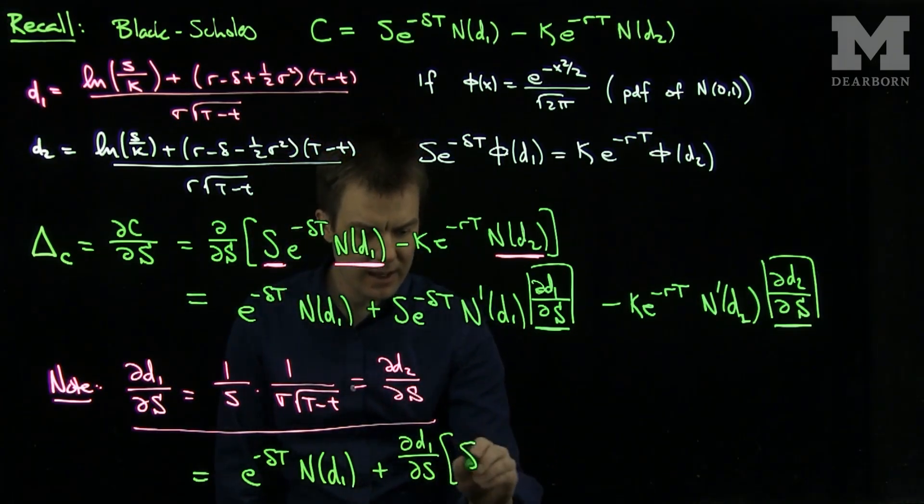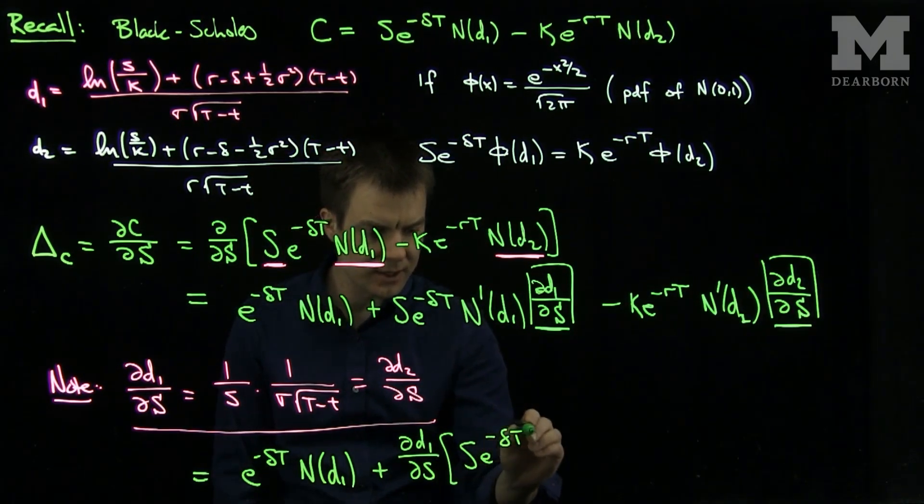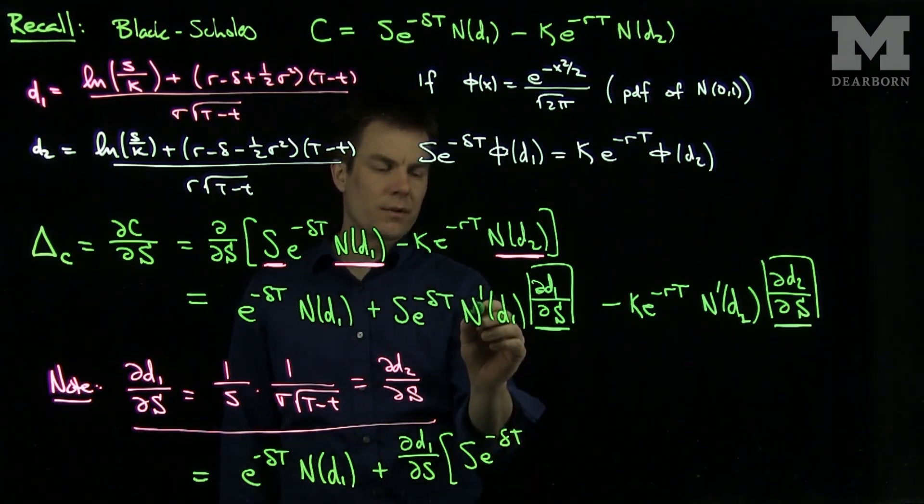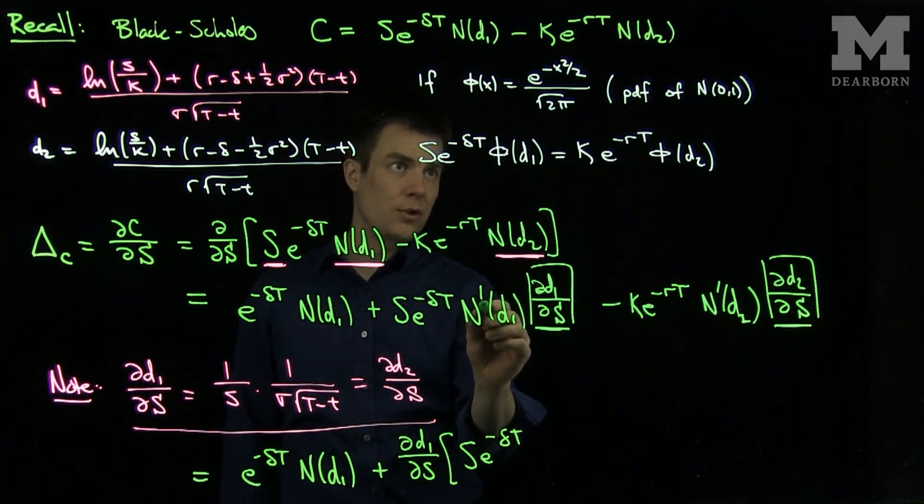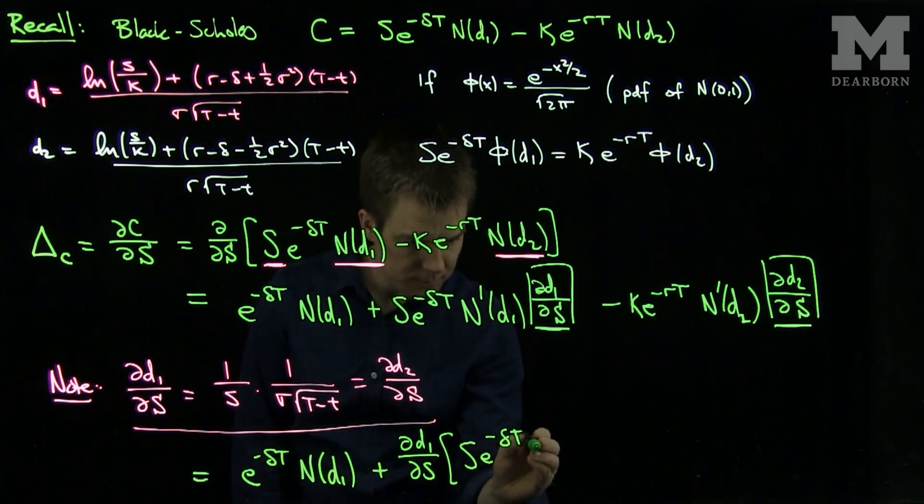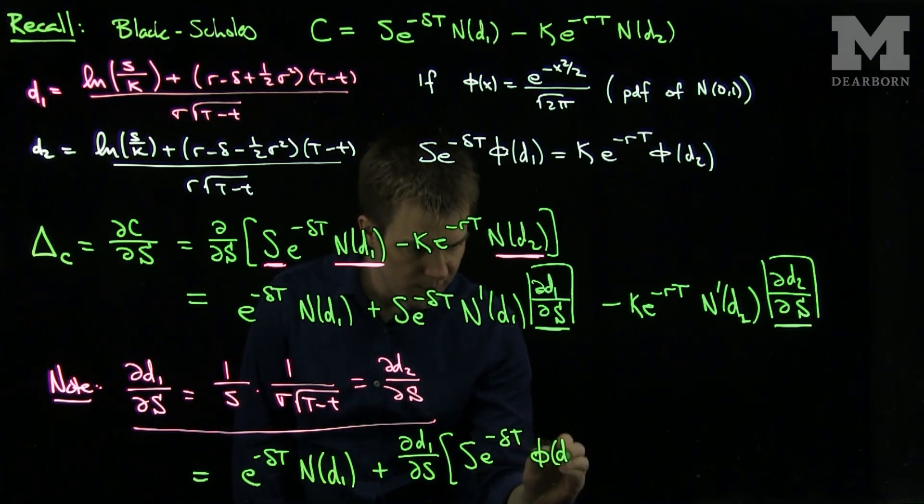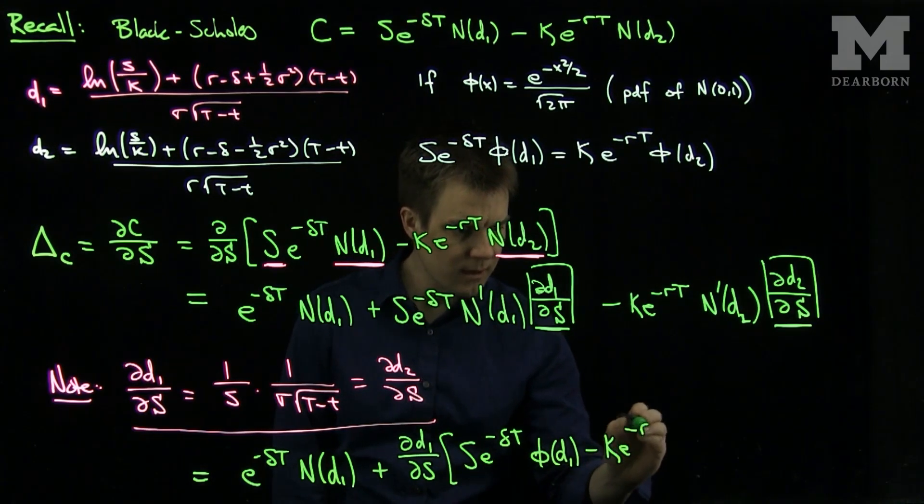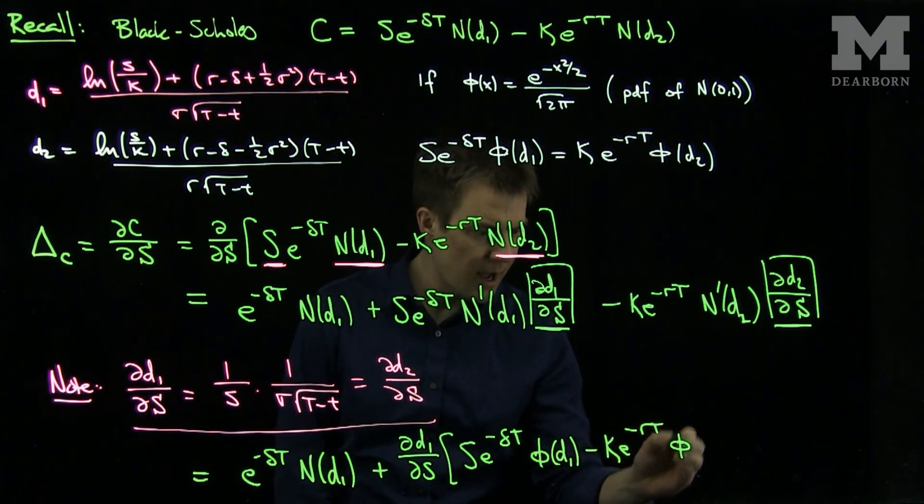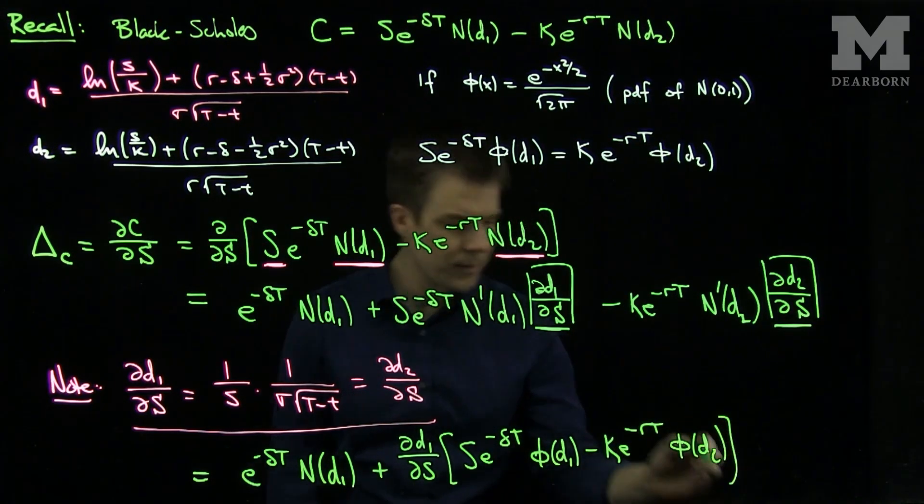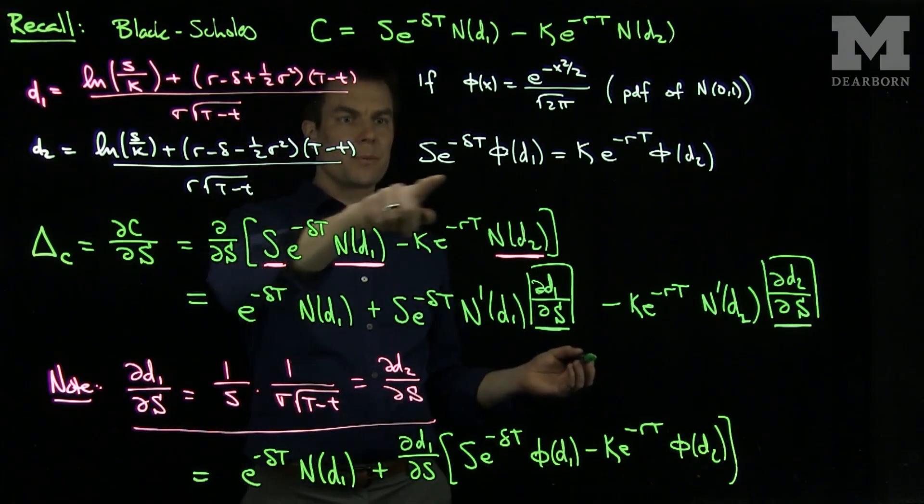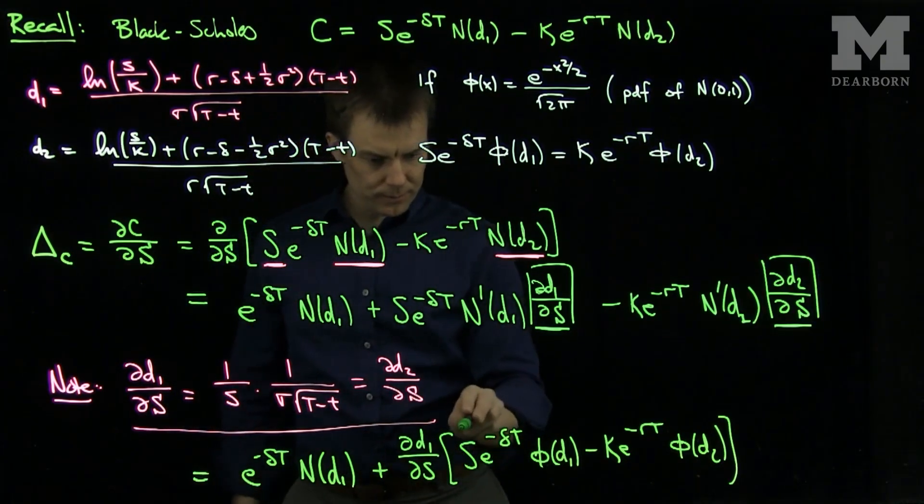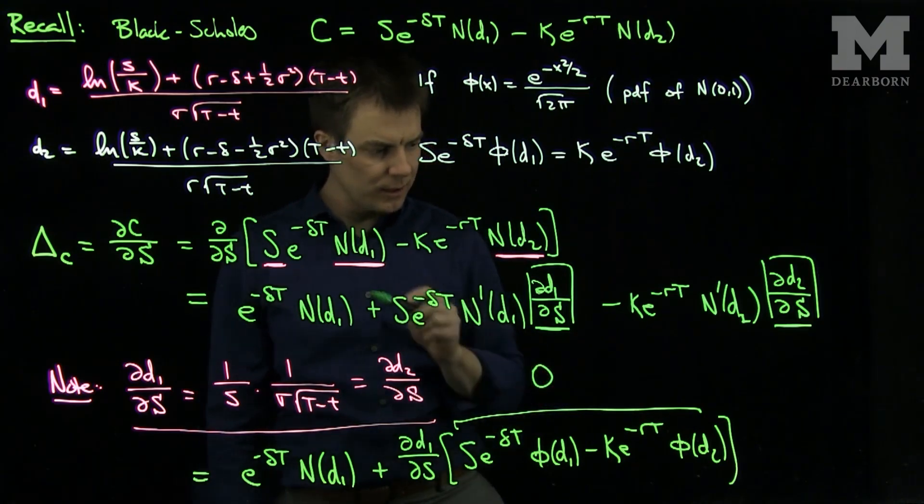And then I'll have an s e to the negative delta t. And now the derivative of the cumulative distribution function of a normal 0,1 is phi. So this will be phi of d1 minus k e to the negative rt phi of d2. And so now by our relationship over here, these two quantities are equal, so this entire expression is 0.